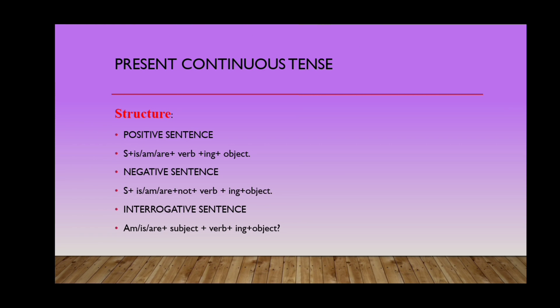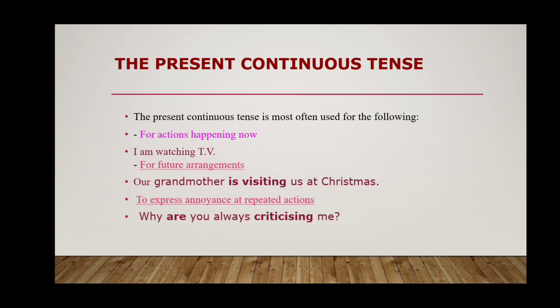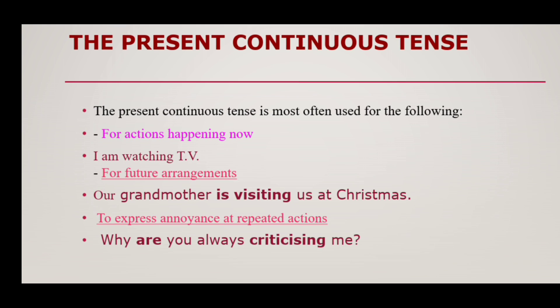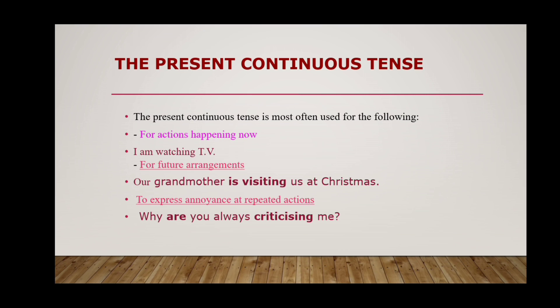Continuous tense is used to express any action which is continuing. We use it to express actions which are happening now, and for future arrangements — for example, 'Our mother is visiting us at Christmas.' Also to express annoyance at repeated actions — for example, 'Why are you always criticizing me?'